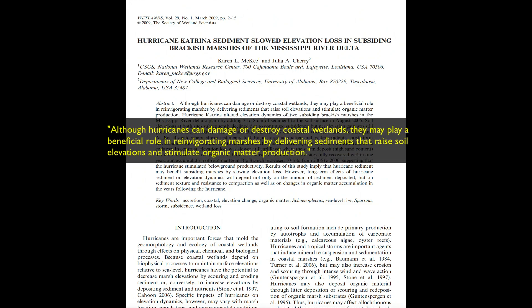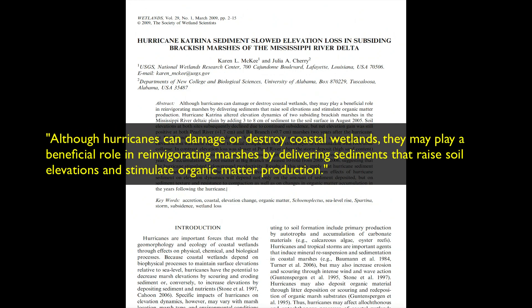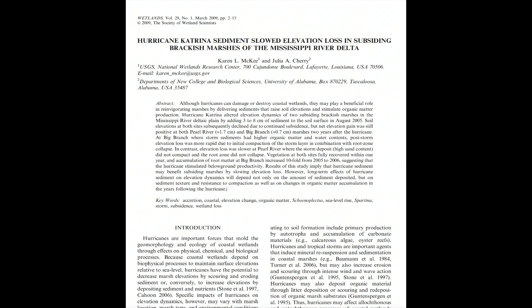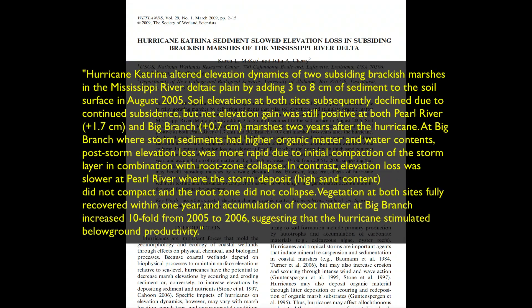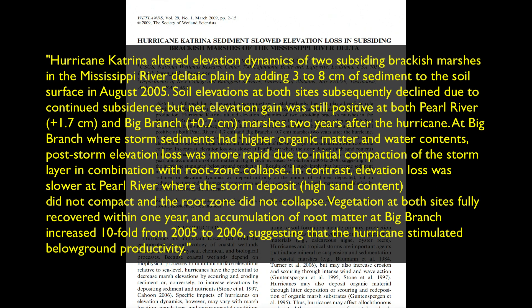In this example, the reason for the study is given in one sentence. Although hurricanes can damage or destroy coastal wetlands, they may play a beneficial role in reinvigorating marshes by delivering sediments that raise soil elevations and stimulate organic matter production. Then the results are described in a way that includes the location and timing of the study and what analyses were conducted, obviating the need for a separate methods segment. Pause the video to read this section.